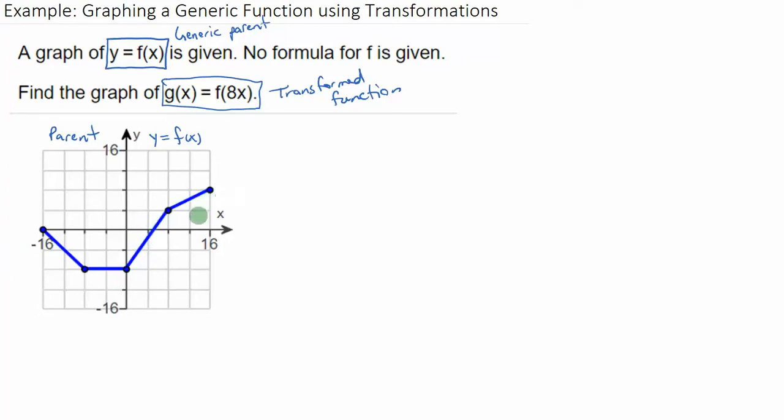So we're going to graph this like we do any other transformations problem. We're going to establish a parent. Parent, that's already done. Check that off. We've got the parent. However, we would like to have some ordered pairs in a table maybe to keep track of this parent through all the transformations that we will come up with. So let me set those up.